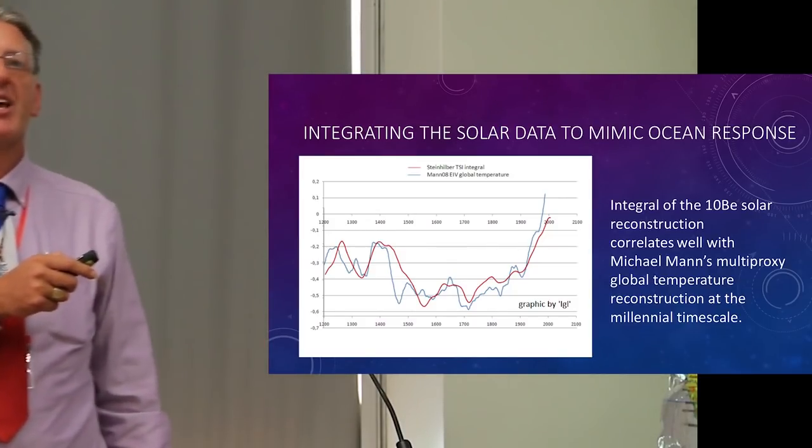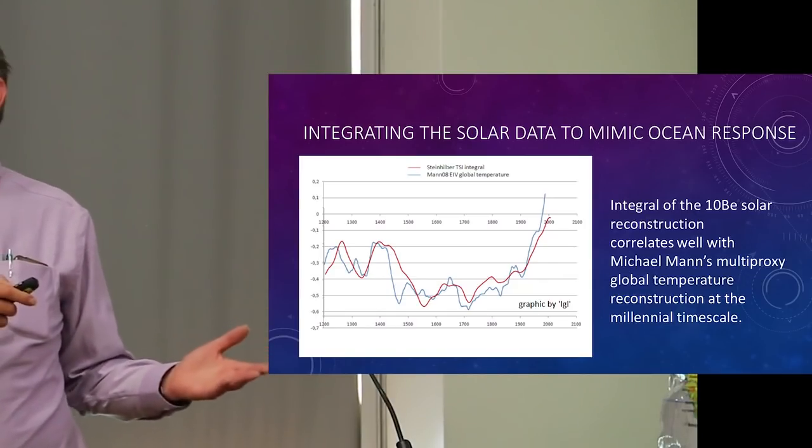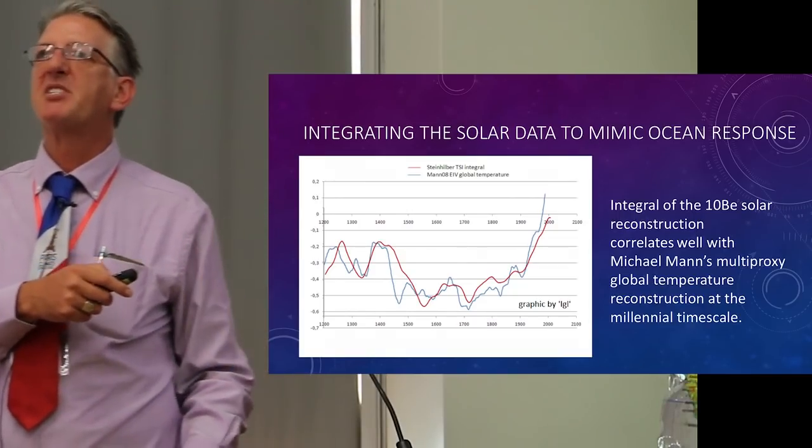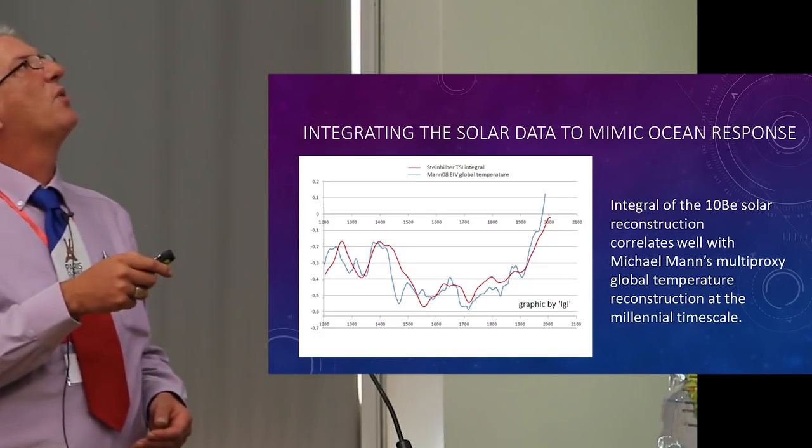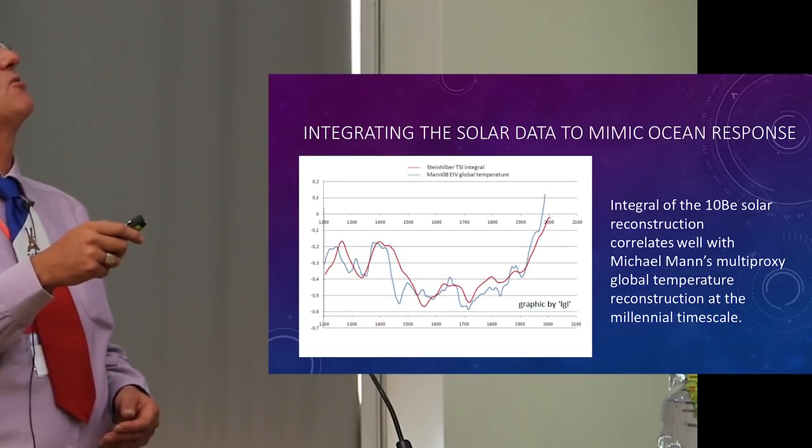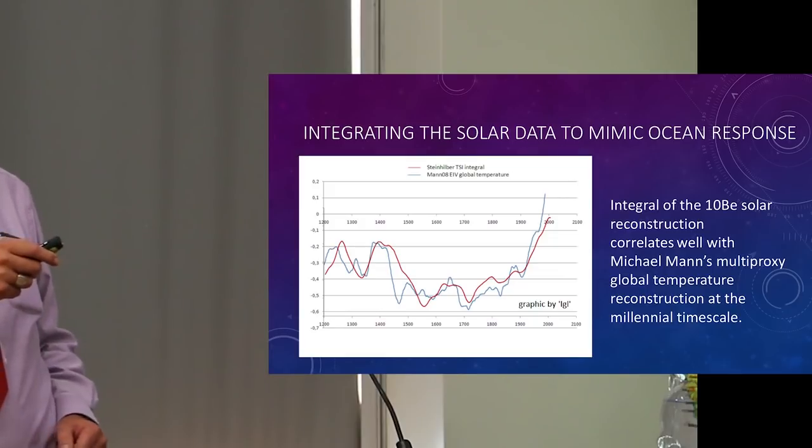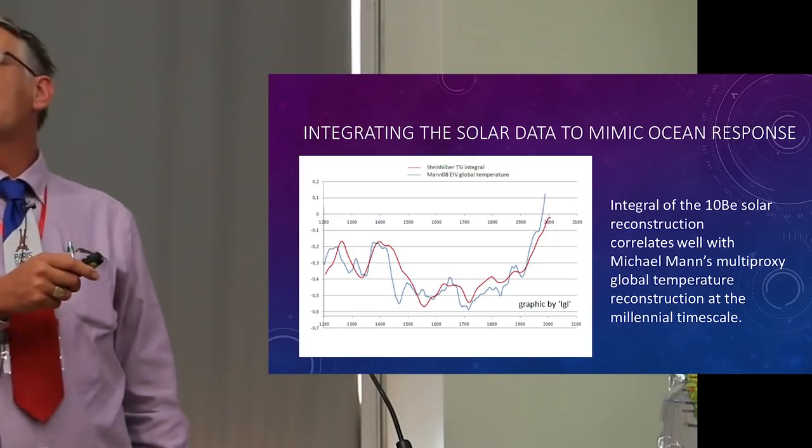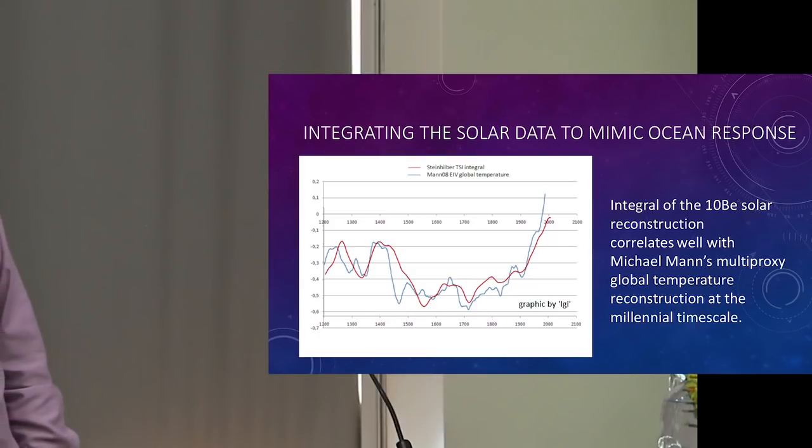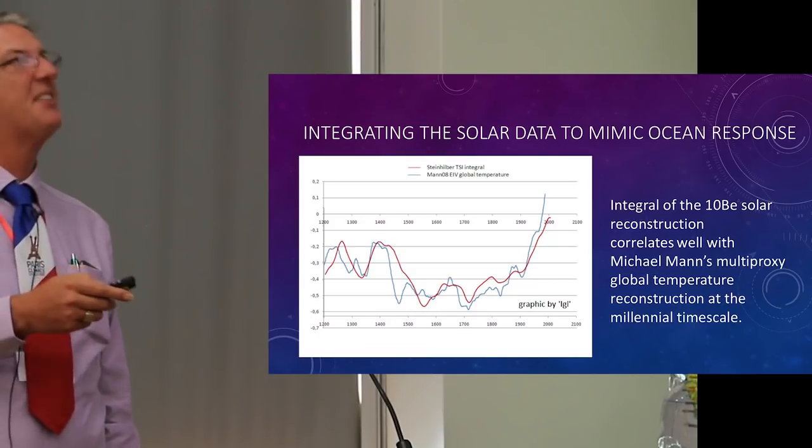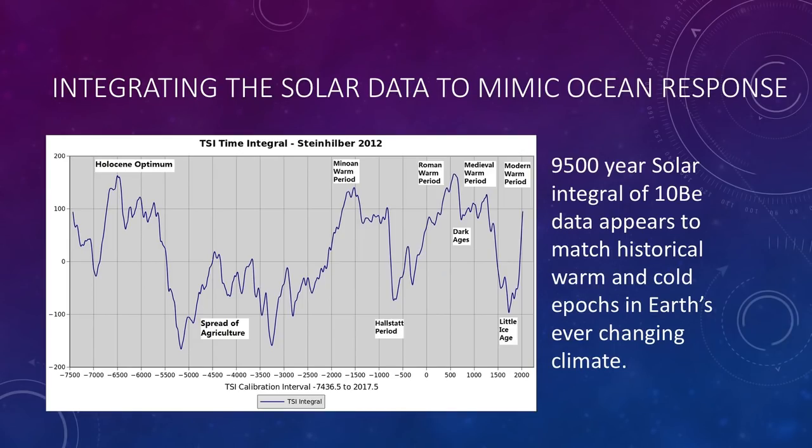What we're seeing here is when we want to understand the effect of solar heat on the oceans we have to remember that the oceans have a massive heat capacity. And so this is similar to what Pavel Kalenda has been telling you about the earth's crust. You integrate the solar data to get some idea of what's going on. So we integrated the solar data as a departure from its long-term average, compared it with Michael Mann's reconstruction of millennial temperature change, and we get a pretty good match, much better than he does with CO2, that's for sure.